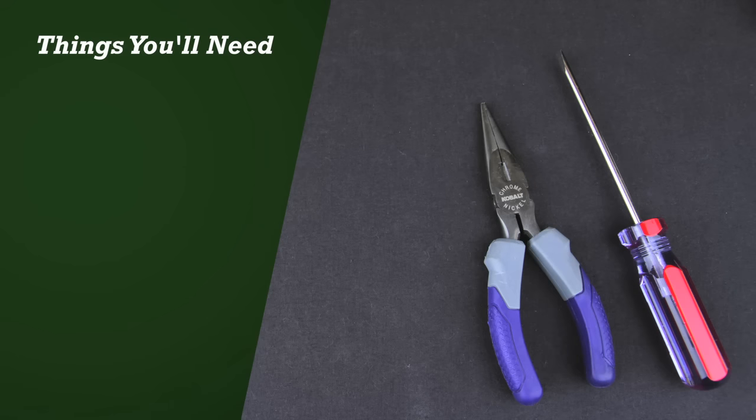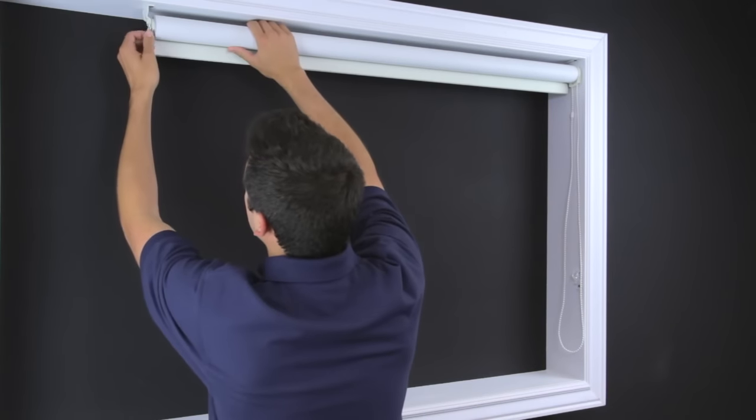The tools you'll need for this repair are a flathead screwdriver and a pair of needle-nose pliers. Remove the shade and lay it on a flat surface.